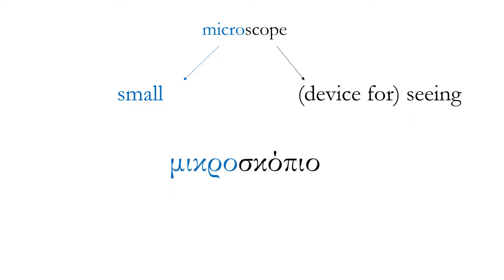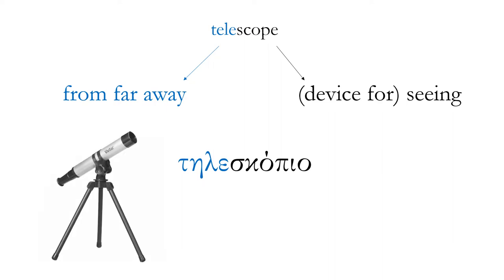Let's look at some words here that we get based on the Greek word scopos. Microscope: micro means small, and a scope is a device that is used for seeing. In Greek we have the microscopio, the thing that helps us see small things. The word telescope: tele means from far away, and again we have our scope, so a telescopio is a thing that helps us see from far away.